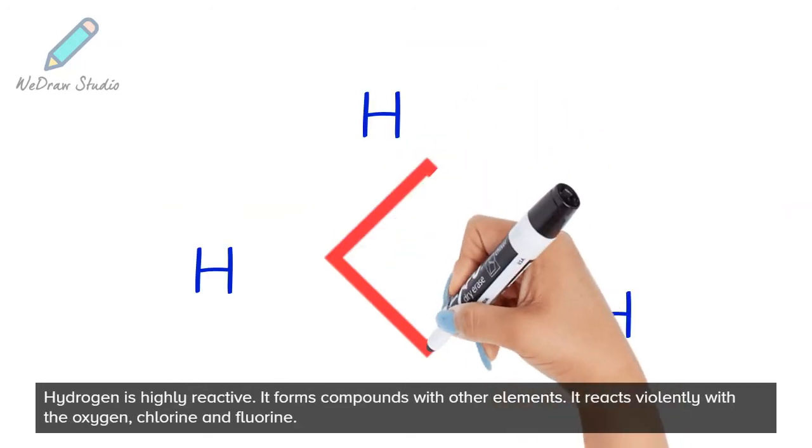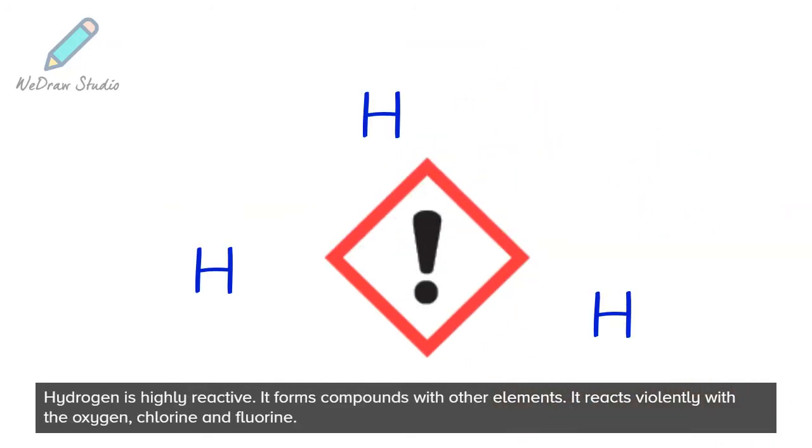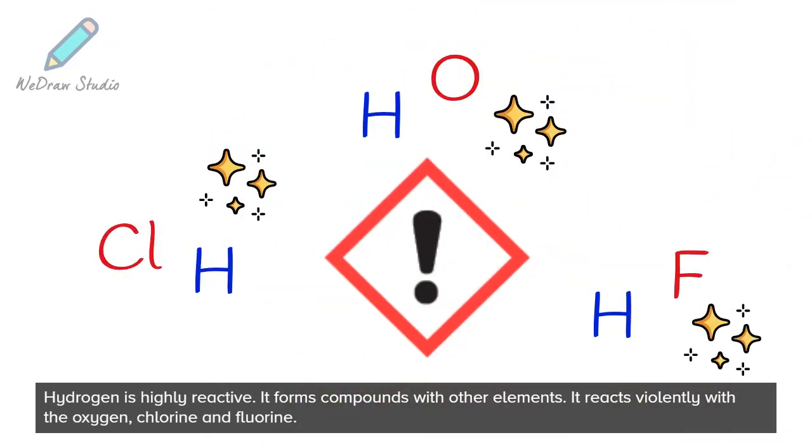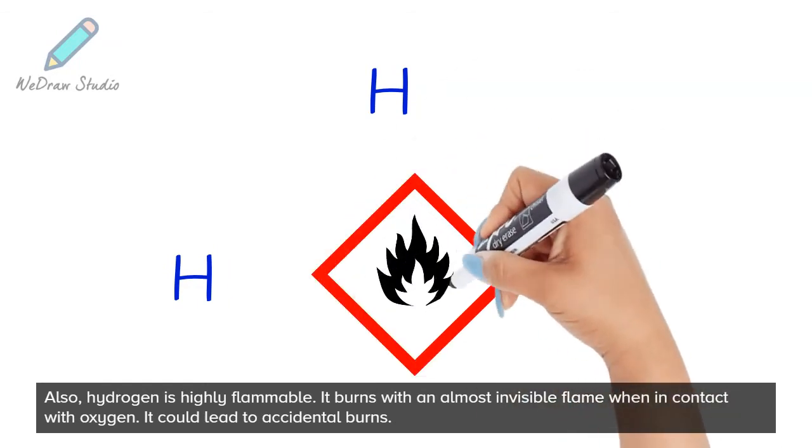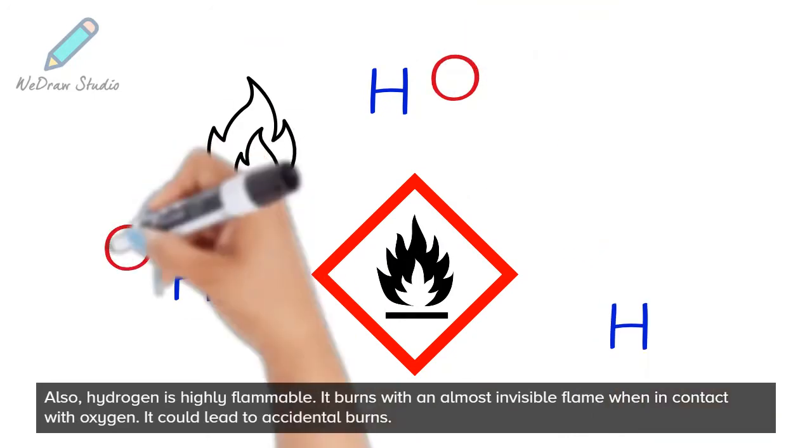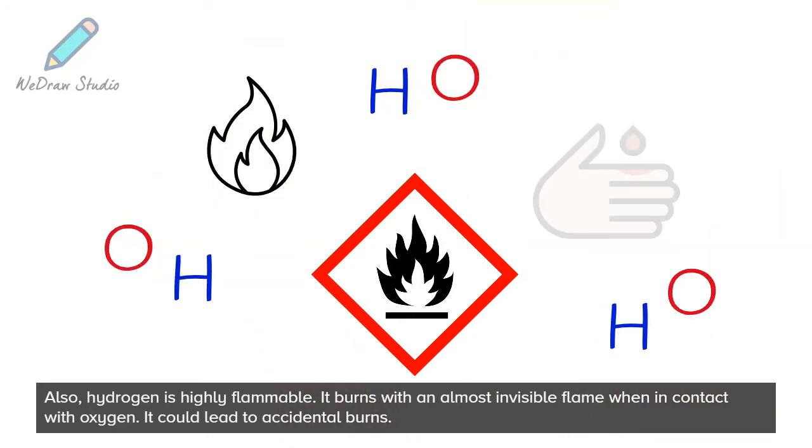Hydrogen is highly reactive. It forms compounds with other elements. It reacts violently with oxygen, chlorine, and fluorine. Also, hydrogen is highly flammable. It burns with an almost invisible flame when in contact with oxygen. It could lead to accidental burns.